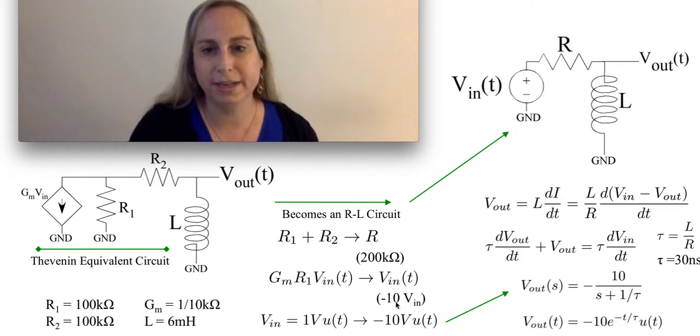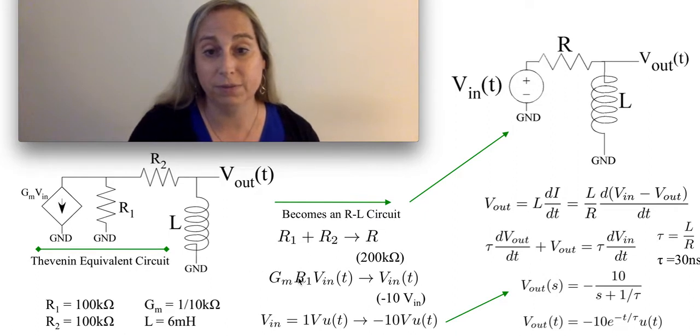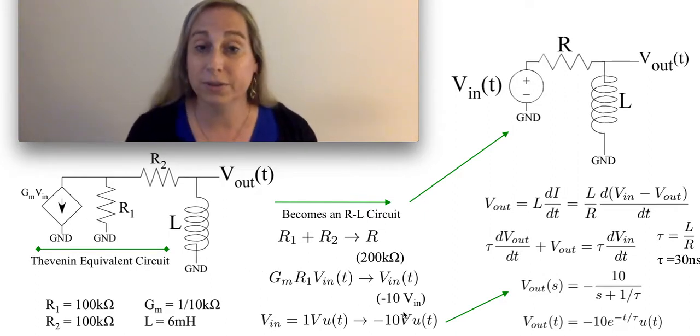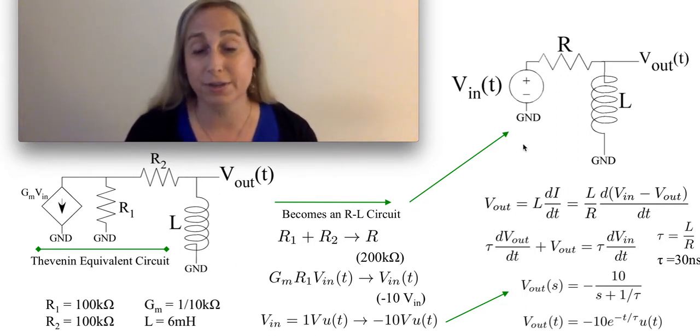But that actually means that VN is about minus 10. And if I was saying I was going to do a step response on this circuit for VN of 1 volt, this is basically equivalent to doing a step response of minus 10 volts. But if I do that, this whole transformation basically gives me now what looks like a very straightforward circuit.